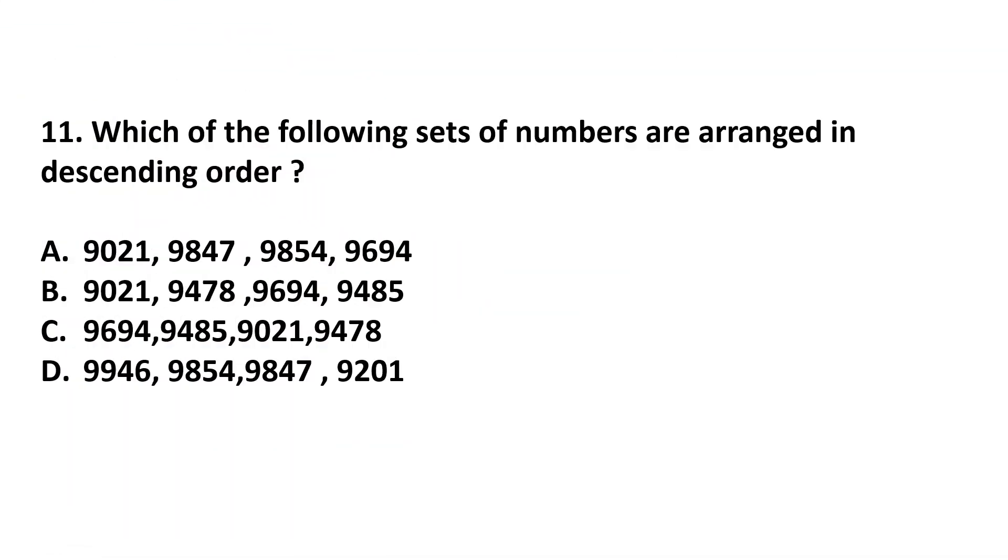Question number 11. Which of the following sets of numbers are arranged in descending order? Kids, look at the options and try to find out the answer. Descending order means arranging the number in biggest to smallest number. The first number is the greatest and the last number is smallest. And the answer is option D.